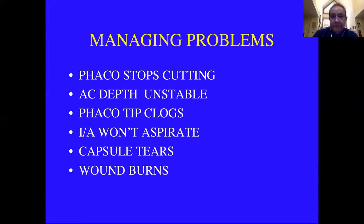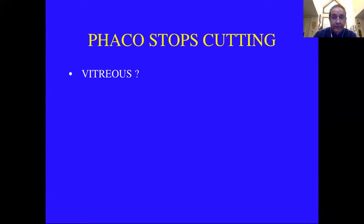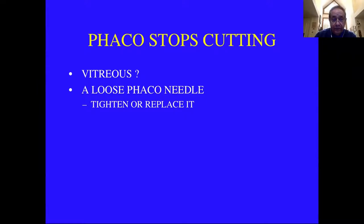You're going to have problems sometimes. Phaco may stop cutting, the anterior chamber depth may be unstable, the tip may clog, you may not get aspiration in IA, you may get a capsule tear, and you can get wound burns. If the phaco stops cutting, first check for a capsule tear and vitreous clogging the tip — phaco will cut lens material or iris or capsule, but it will not cut vitreous. You can wiggle the handle a little and see the end of the needle move loosely if that's the issue. You have to come out of the eye and tighten or replace the tip.